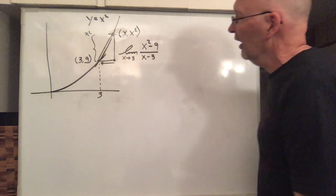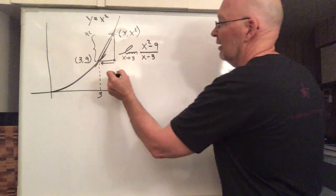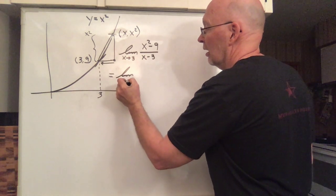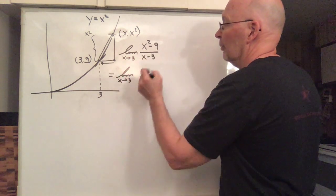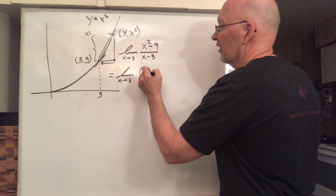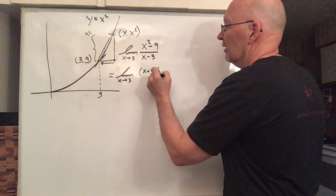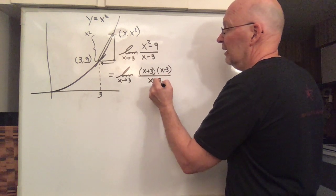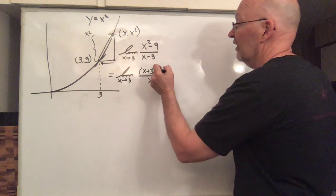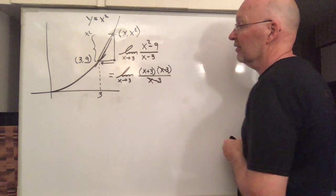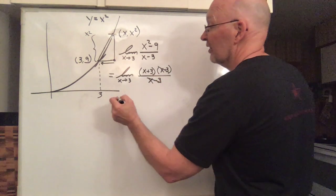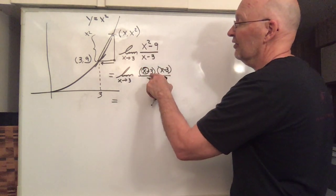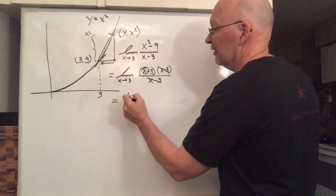And so to evaluate this limit, we say, well, let's see now, this is equal to x squared minus 9, that can be written as x plus 3 times x minus 3, and then the bottom is still x minus 3. And then we see that this can divide out with this, and now as x gets closer and closer to 3, that keeps getting closer to 3, this is a 3, 3 plus 3 is going to be 6.